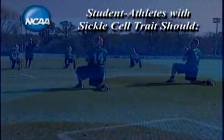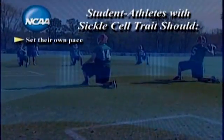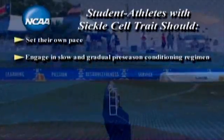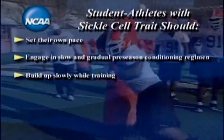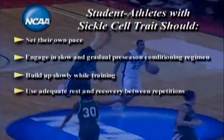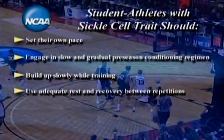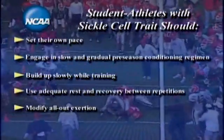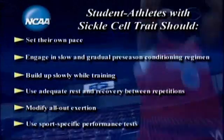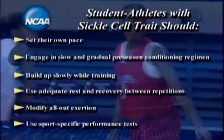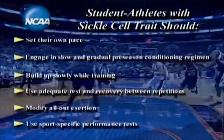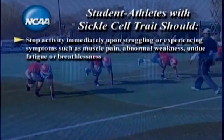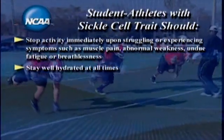Let's review precautions for student athletes with sickle cell trait. Student athletes should set their own pace. Engage in a slow and gradual pre-season conditioning regimen to be prepared for sports-specific performance testing and the rigors of competitive intercollegiate athletics. Build up slowly while training using paced progressions. Use adequate rest and recovery between repetitions, especially during gassers and intense station or mat drills. Modify all-out exertion beyond two or three minutes without a breather, and discourage pushing or urging along during signs of discomfort. Use sport-specific performance tests, and excuse student athletes from performance tests such as serial sprints or timed mile runs, especially if these are not normal sports activities. Stop activity immediately upon struggling or experiencing symptoms such as muscle pain, abnormal weakness, undue fatigue, or breathlessness. Stay well hydrated at all times, especially in hot and humid conditions.